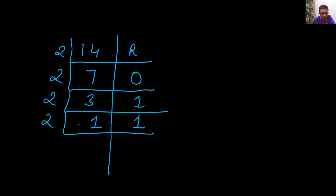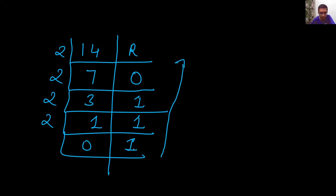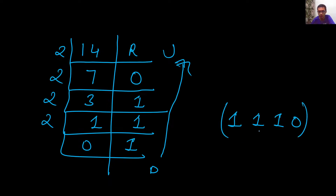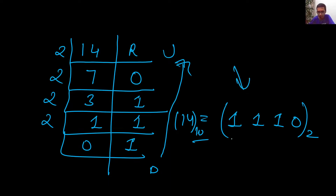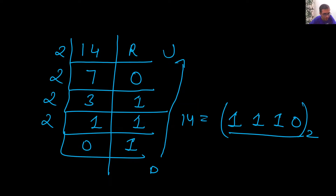Writing these remainders from bottom to top, we get 1, 1, 1, 0. So 1110 is the binary representation of 14. Now I want you to try this problem on your own, then come back and see the solution.